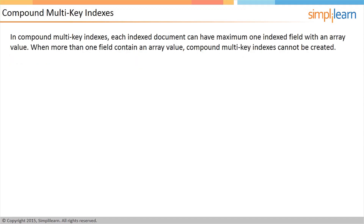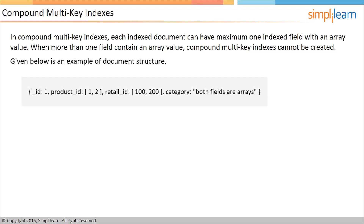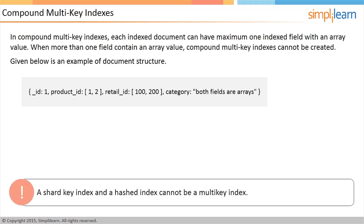In compound multi-key indexes, each indexed document can have a maximum of one indexed field with an array value. If more than one field has an array value, you cannot create a compound multi-key index. In the collection shown on the screen, both the product_id and retail_id fields are arrays; therefore, you cannot create a compound multi-key index. Note that a shard key index and a hashed index cannot be a multi-key index.